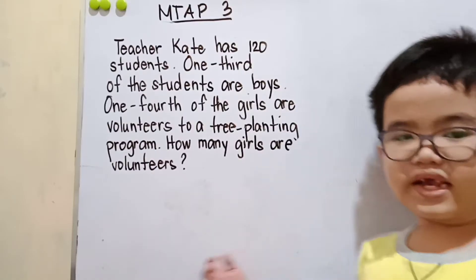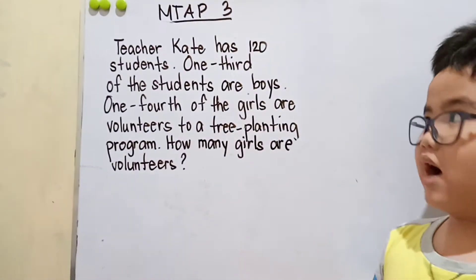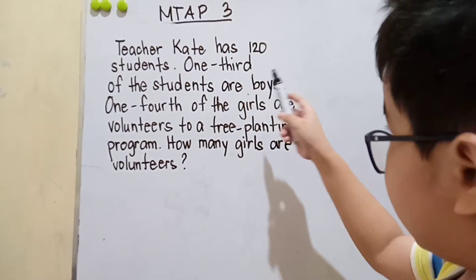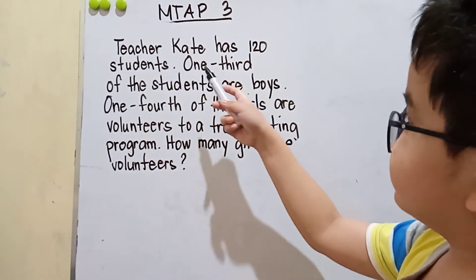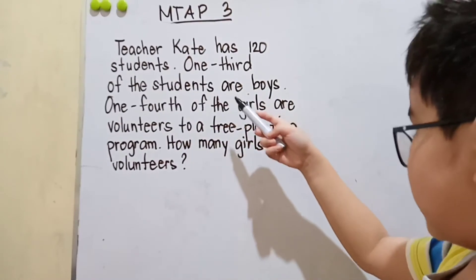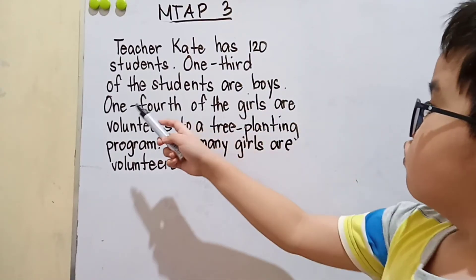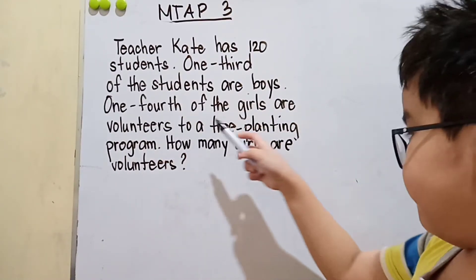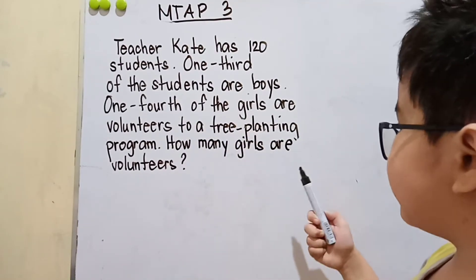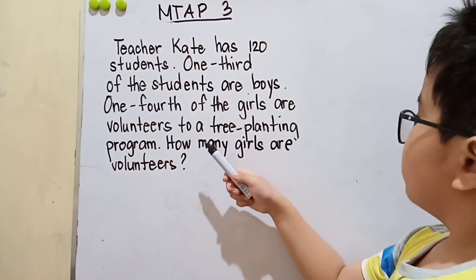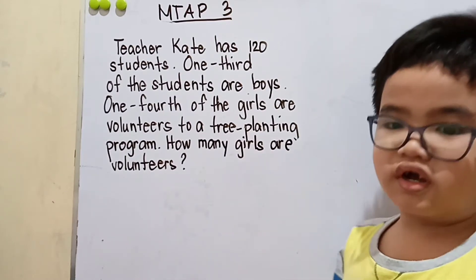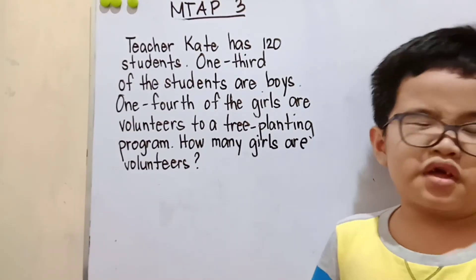Now this is the second problem. Teacher Kate has 120 students. One third of the students are boys. One fourth of the girls are volunteers for the tree planting program. How many girls are volunteers? Come on, let's solve it.